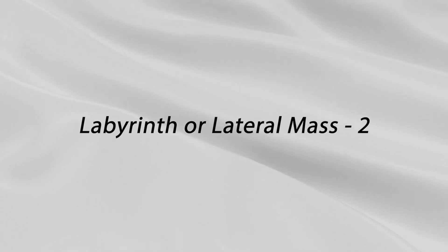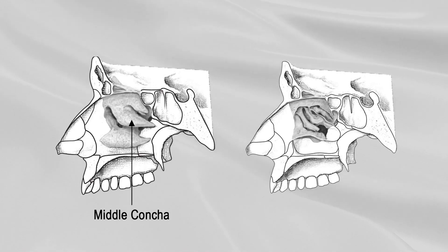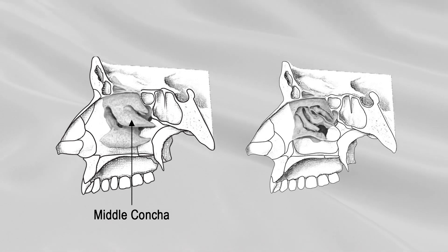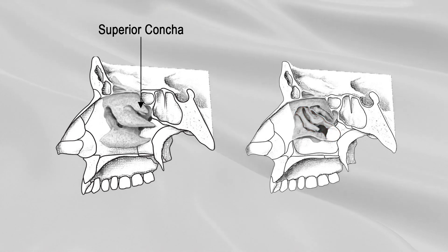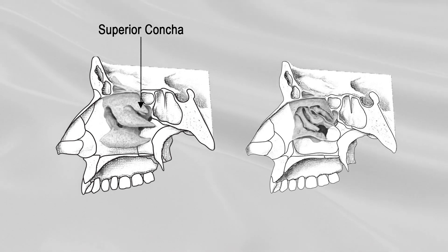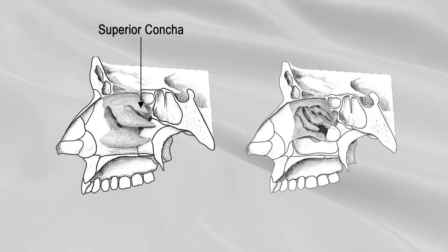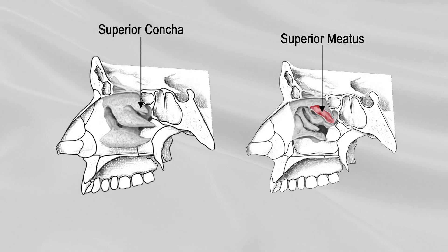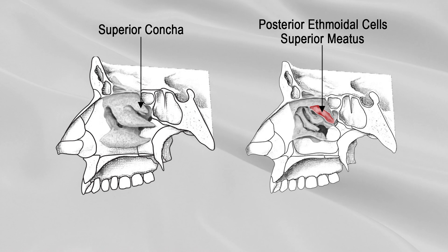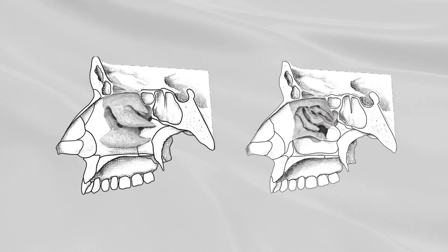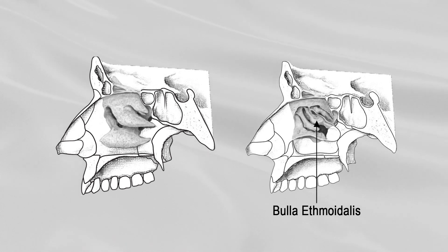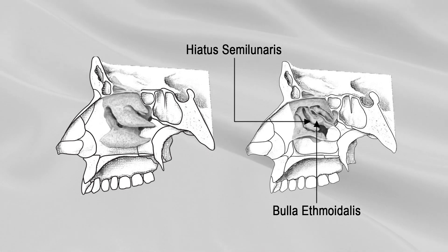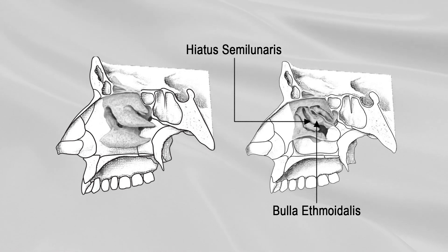The middle concha is a projection from the medial surface of the ethmoidal labyrinth. The passage beneath the middle concha is known as the middle meatus of the nose. The superior concha is also a projection from the medial surface of the ethmoidal labyrinth, situated just above the posterior part of the middle concha. The passage beneath the superior concha is known as the superior meatus of the nose, which receives openings of the posterior ethmoidal cells. The middle meatus presents a rounded elevation, the bulla ethmoidalis, and a curved sulcus, the hiatus semilunaris, located anterior inferior to the bulla.